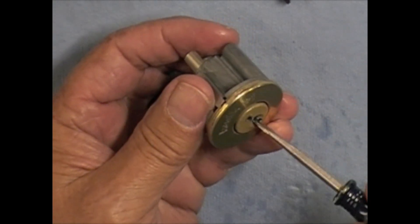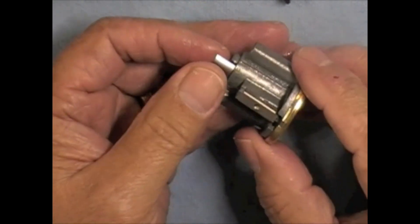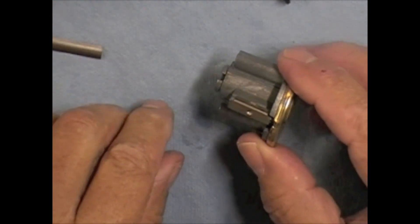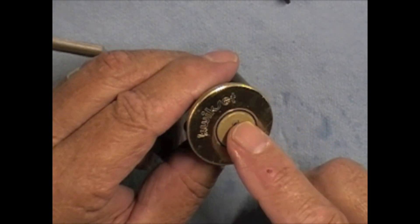And we can see that now we can turn the plug. We don't need the shim stock in there any longer. We can just go ahead and pull that out. Put it aside. Then we can get a follower and we can push the plug out.